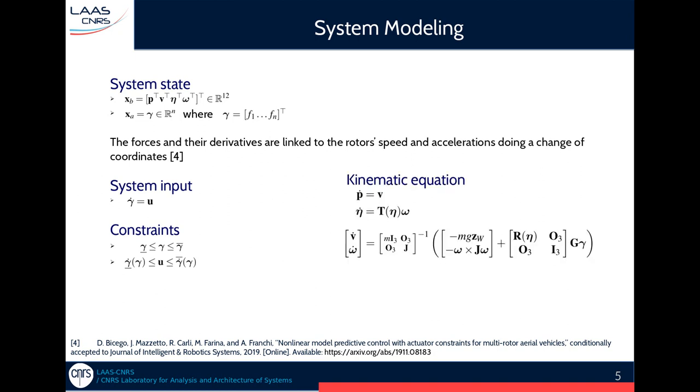We can now define the kinematic equation of our system, so p dot is equal to v, theta dot is equal to T times omega, where T is the Jacobian matrix. We compute the accelerations using this formula where O is the nu matrix, I is the identity, and J is the inertia matrix. And G is defined like this as the force moment allocation matrix that maps the force and moment of each propeller to the force and moment of the whole body.